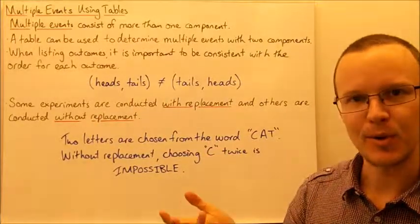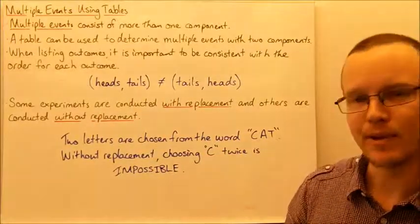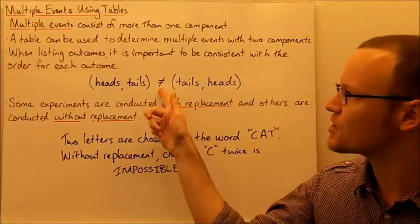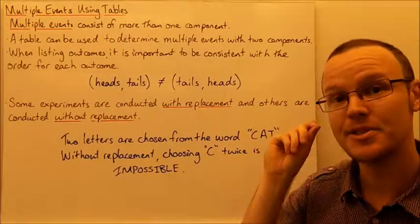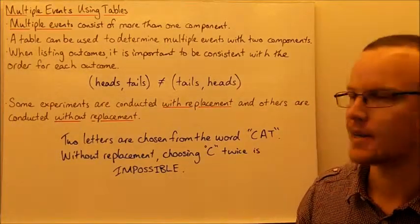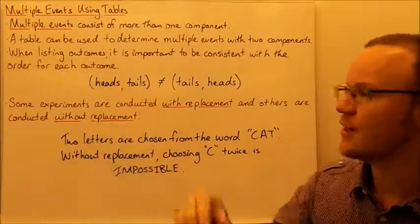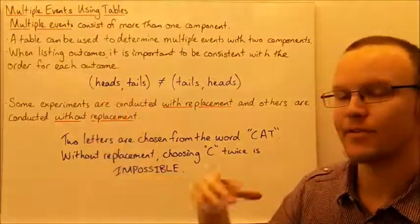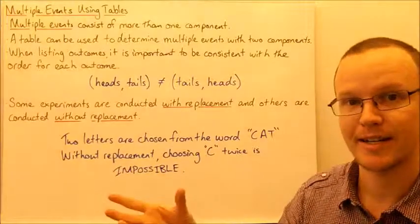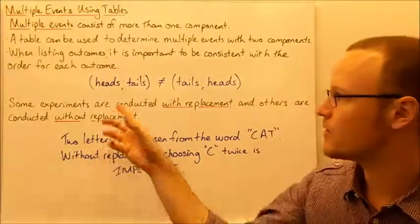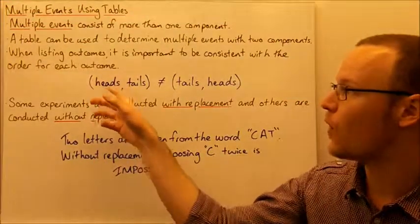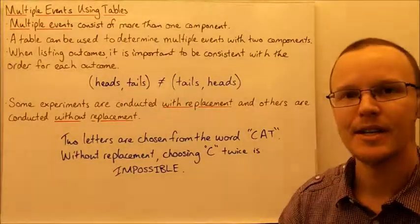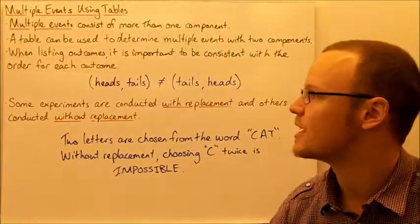For example, if I'm flipping a coin and I flip heads then tails, that's not the same as flipping tails then heads. These are the two components. It's convention to write down the first outcome from the first component before the second outcome from the second component. So heads then tails is different from tails then heads.